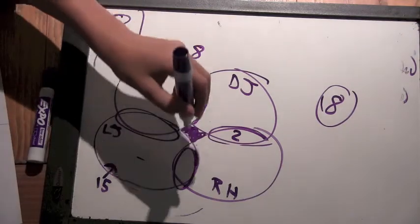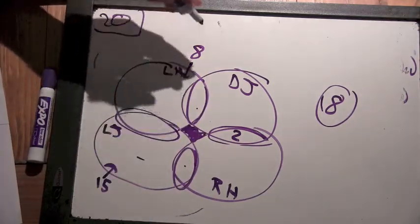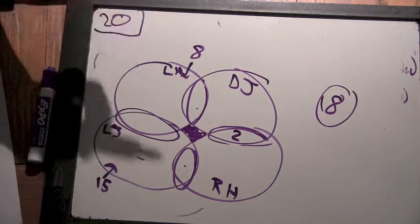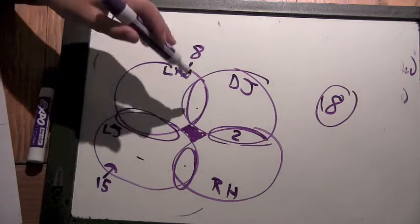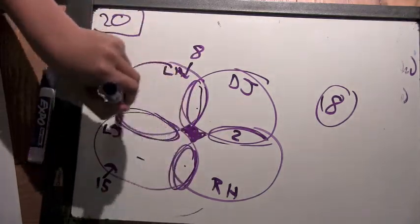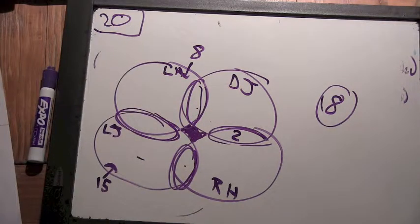Why? Because 8 plus 15 minus 5 is 18. These three circles have to add up to 18. Not circles, those overlaps. The overlaps have to add up to 18.